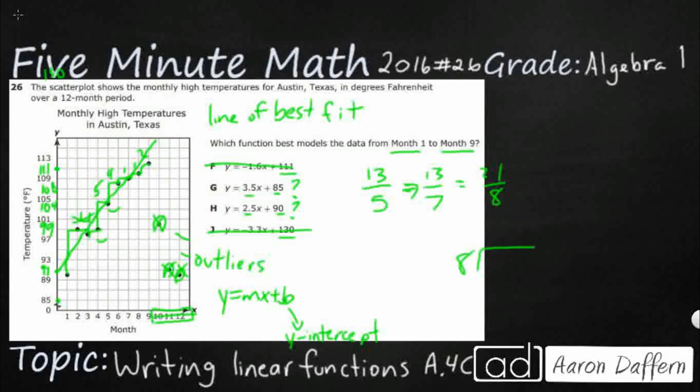So how many times does 8 go into 21? That's going to be 2. Okay, 2 and 5 eighths. Pretty close to 2.5. That's 2 and 4 eighths. So my answer here is definitely going to be H.